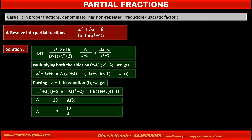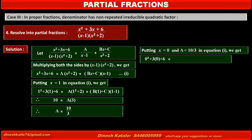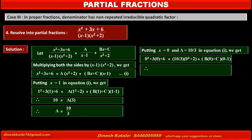To find the value of C, we cancel the term of B by putting x = 0. Substituting x = 0 and A = 10/3 in equation 1: 0 + 0 + 6 = (10/3)(0 + 2) + (B(0) + C)(0 - 1). Solving the above step, we get C = 2/3.